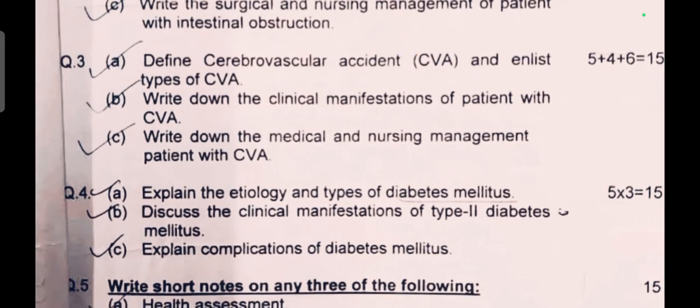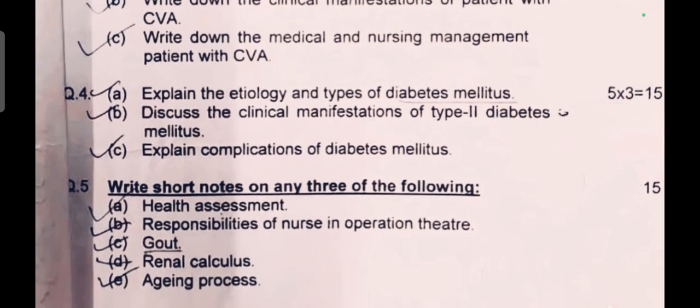Question number three: (a) Define cerebrovascular accident (CVA) and enlist types of CVA — 5 marks. (b) Write down the clinical manifestations of patient with CVA. (c) Write down the medical and nursing management of patient with CVA — 4 and 6 marks respectively. Total 15 marks.